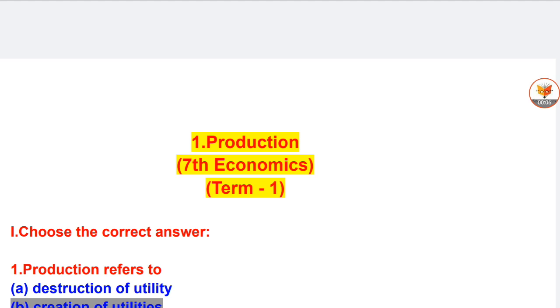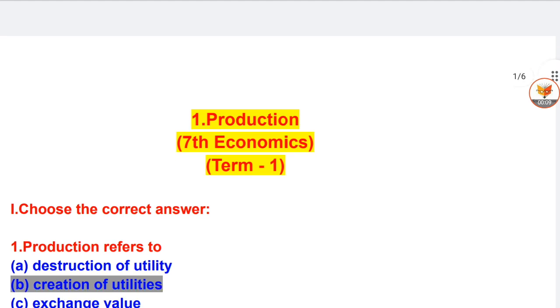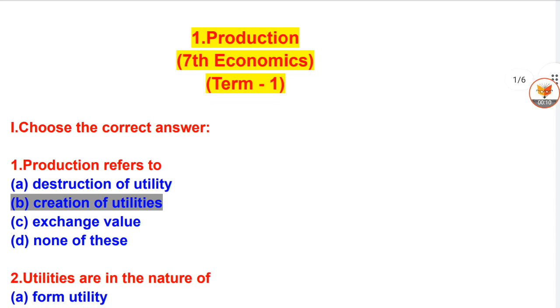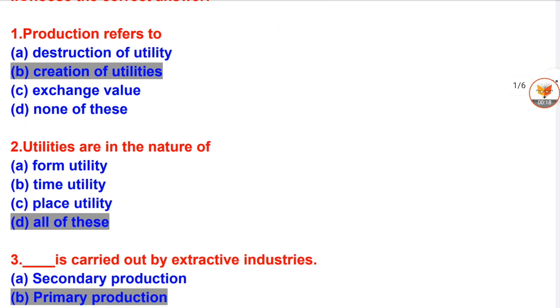Choose the correct answer. Question 1: Production refers to — A. Destruction of utility. B. Creation of utilities. C. Exchange value. D. None of these.